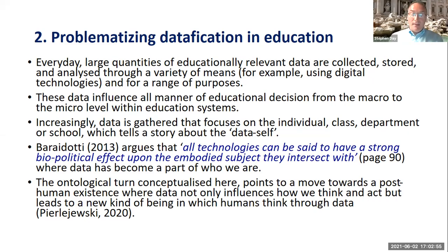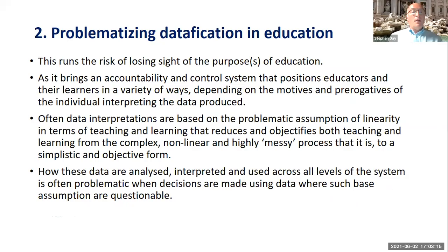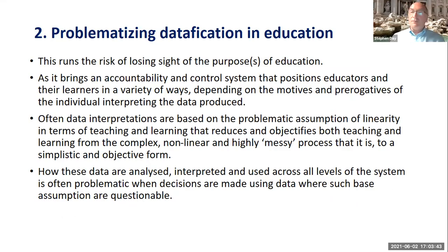This points towards a move towards a post-human existence where data not only influences how we think and act but leads to new kinds of ways of being in which humans think and talk through data. This runs the risk of losing sight of the purpose or purposes of education. It brings an accountability and control system that positions teachers, other educators, and their learners in a variety of ways depending on the motives of those interpreting the data — often based on the problematic assumption of linearity in teaching and learning, reducing and objectifying both from complex, non-linear, messy processes to a simplistic objective form.